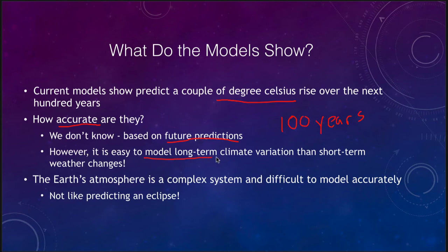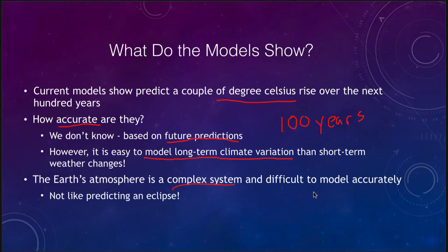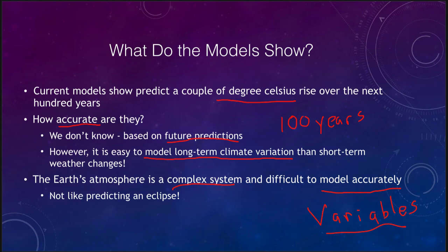It is actually a lot easier to model long-term climate variations than short-term weather changes. We can smooth out a lot of the variables and get a better model of the long-term variations, and they seem to match at least going backwards with observations we can estimate of what the climate on earth was like. As we get more data we are able to better refine those variables.